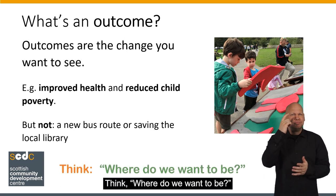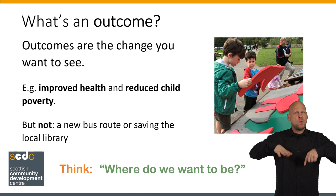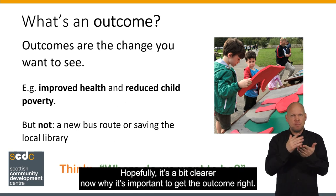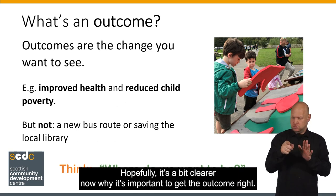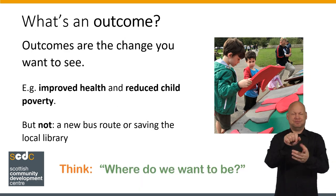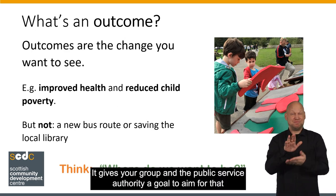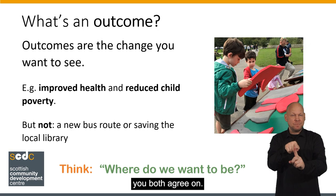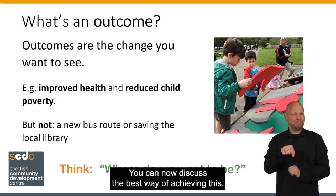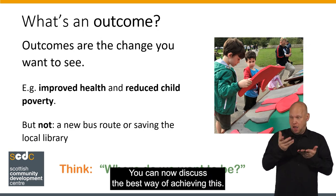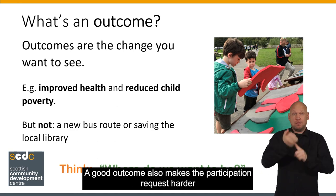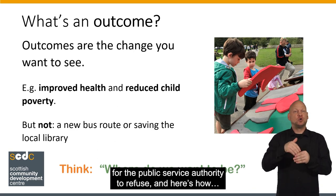Think: where do we want to be? Hopefully it's a bit clearer now why it's important to get the outcome right. It gives your group and the public service authority a goal to aim for that you both agree on. You can now discuss the best way of achieving this. A good outcome also makes the participation request harder for the public service authority to refuse.